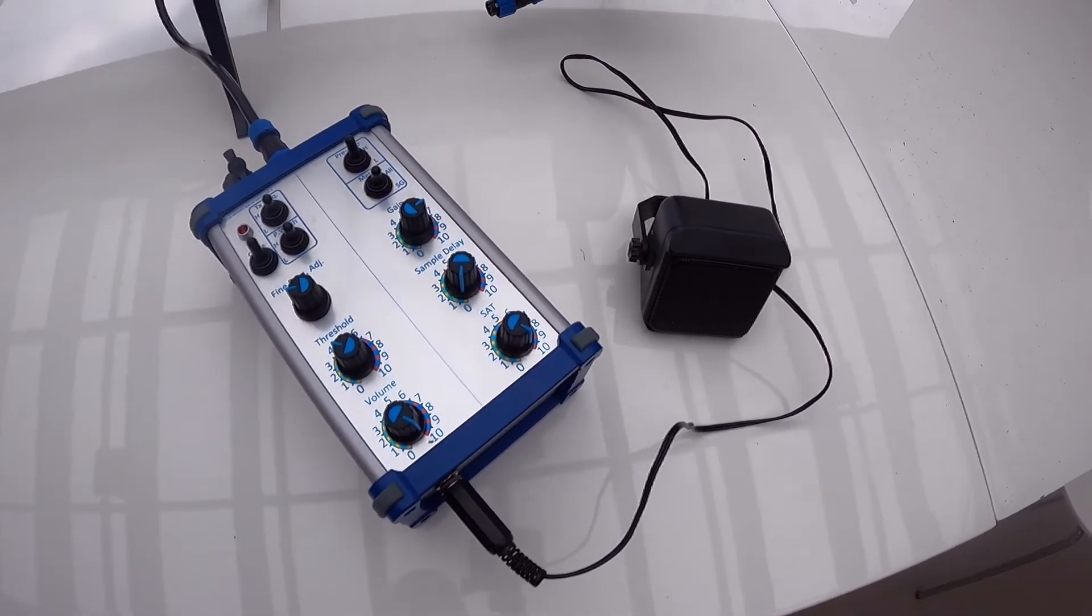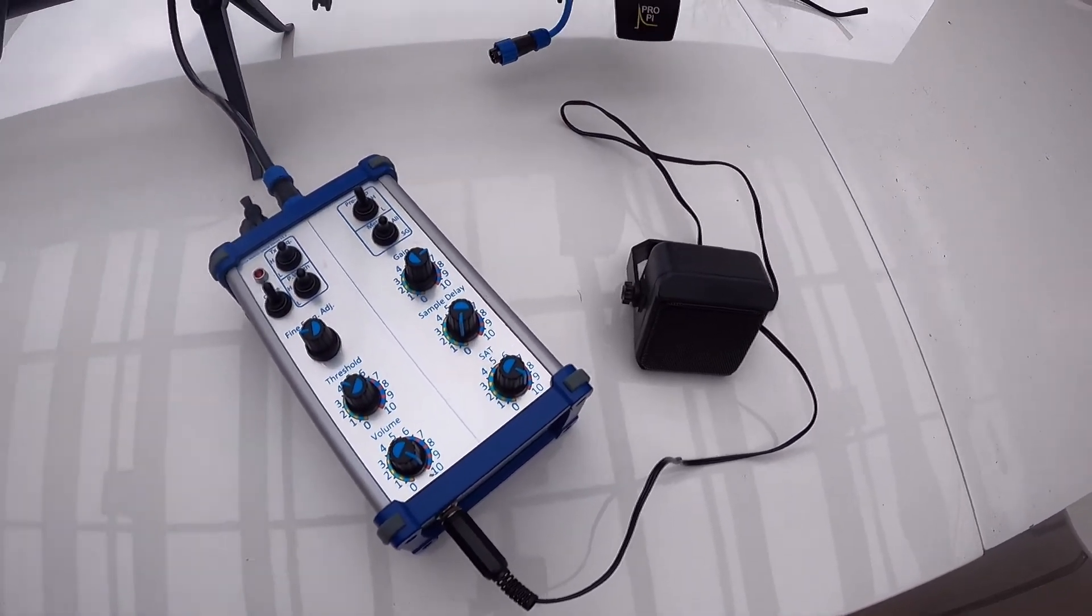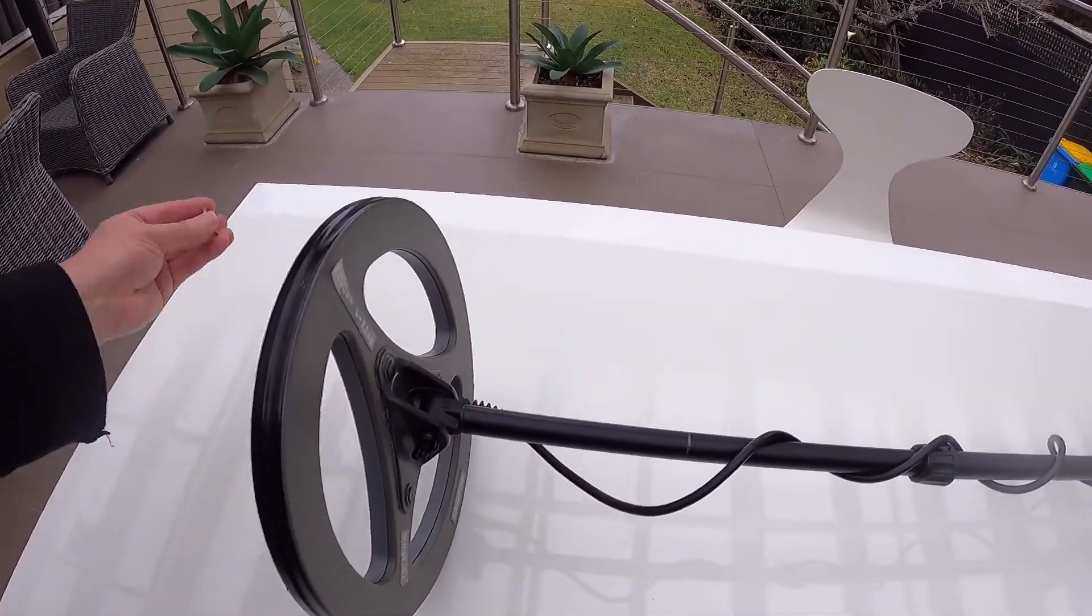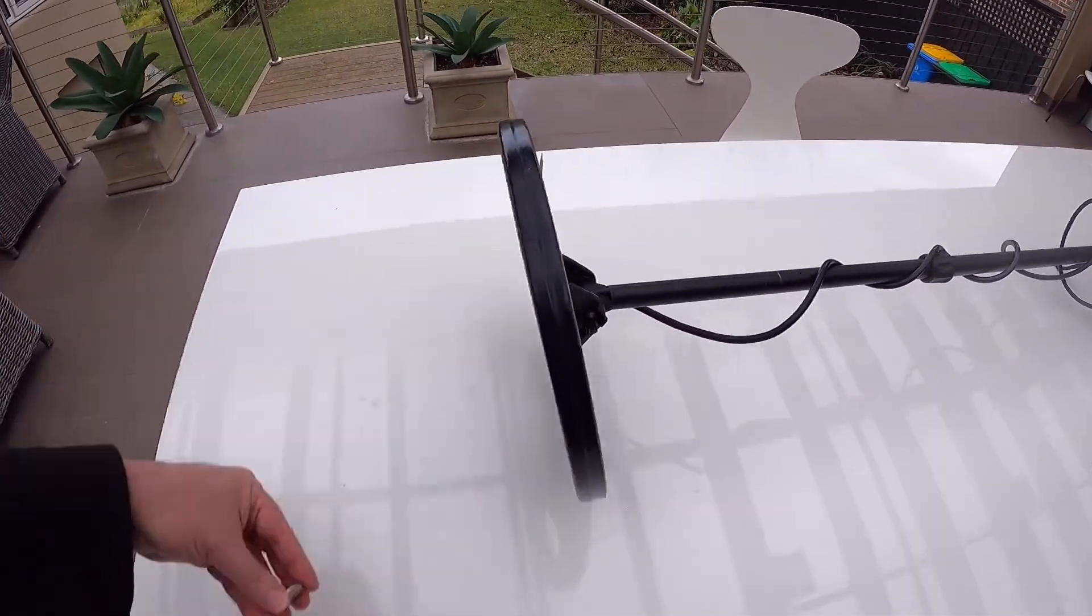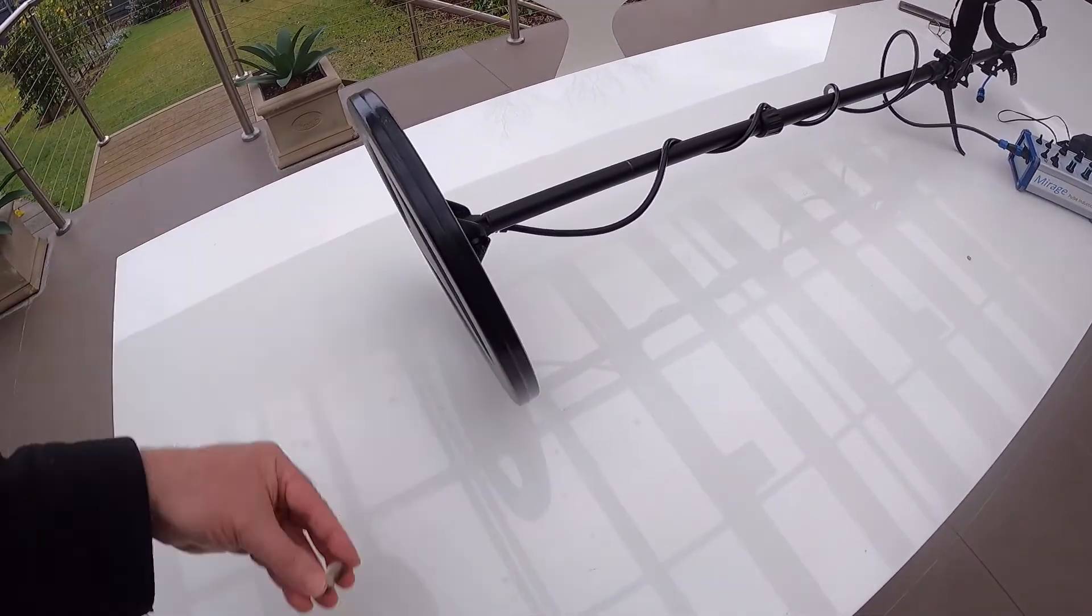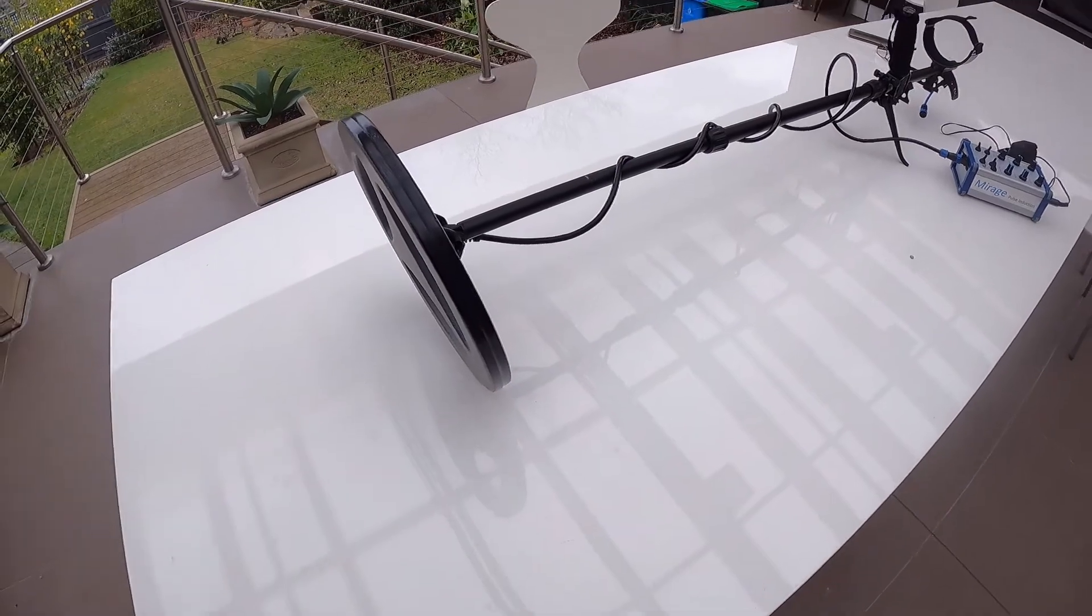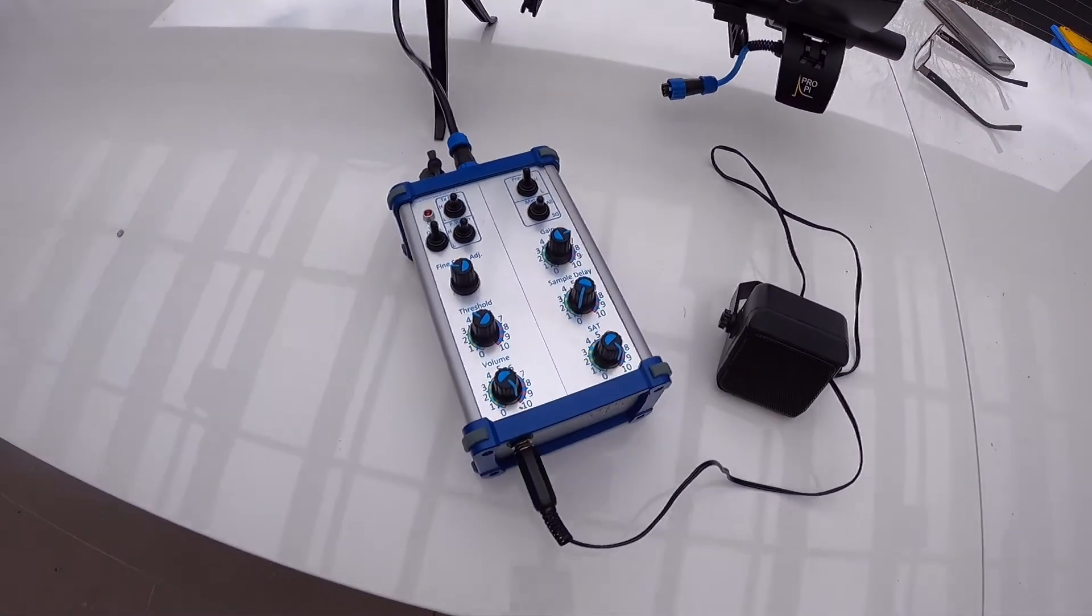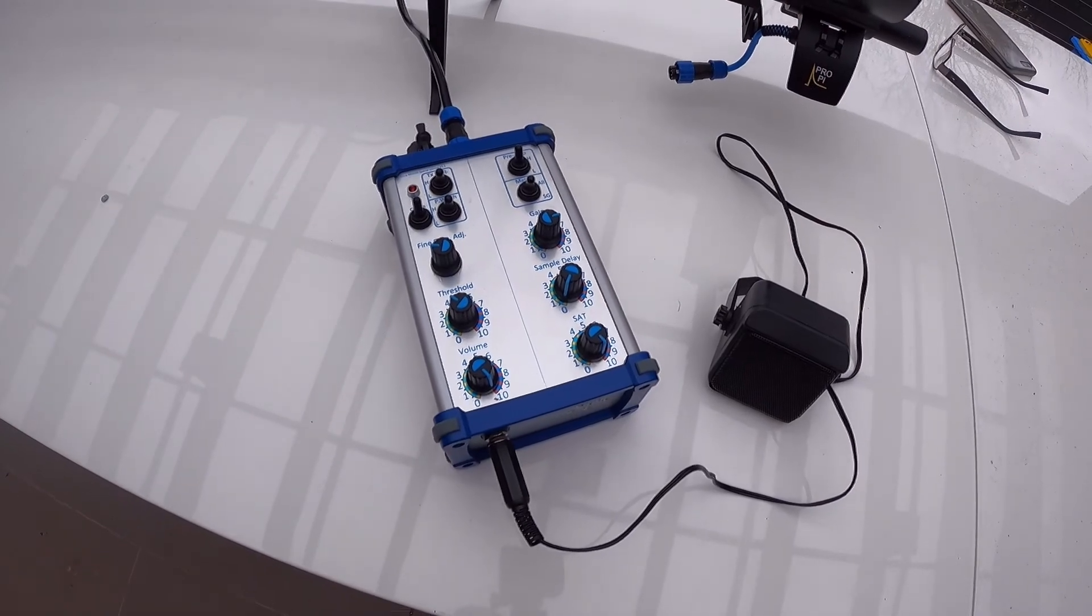Now the machine's ready to detect. So if I put a coin near the search coil... Okay, so now you're all set and ready to go. Happy dirt fishing.